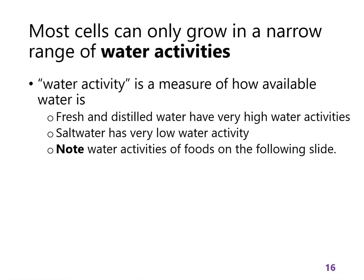In chemical reactions that involve water, they are affected by the water activity. Distilled water and fresh water have the highest possible water activity — there's nothing in them that would prevent an organism from getting water. Salt water has a much lower water activity; the salt prevents that water from being available to some extent. On the following slide, we'll see some water activities of foods — you don't have to memorize them, but look at the order and think about how often those materials grow microorganisms.